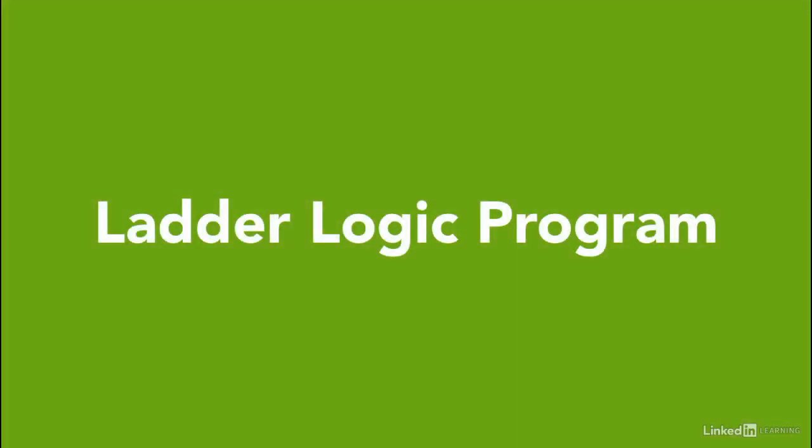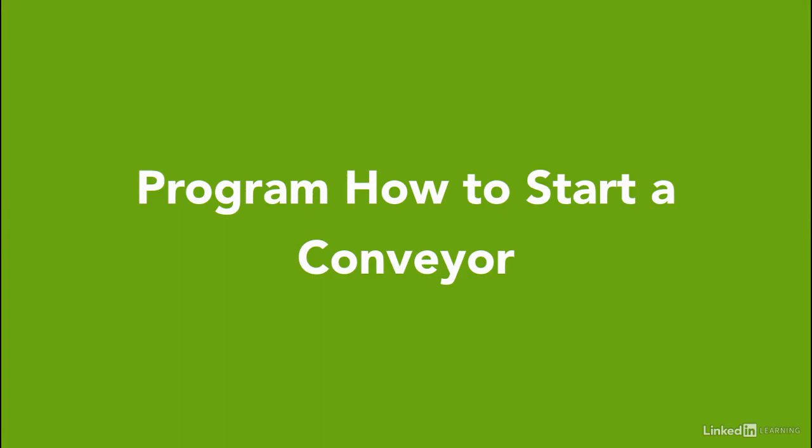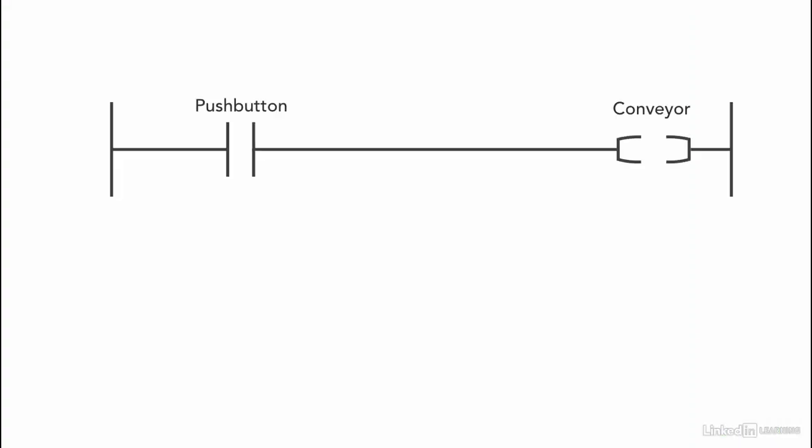Let's start programming by knowing how to start the conveyor. Since we're using a normally open contact for the start push button, in the ladder logic we are going to use an XIC instruction and a regular output for the conveyor. In order to keep the conveyor working, we are going to use a CLN instruction, and in the CLN instruction we are going to use the same address as the conveyor to keep the output on.